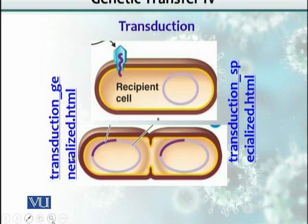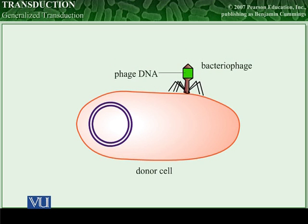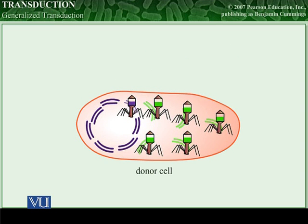In transduction, DNA from the chromosome of one cell is transferred to another cell via a replicating virus. A virus that infects bacteria is called a bacteriophage or phage. There are two types of transduction: generalized transduction and specialized transduction.